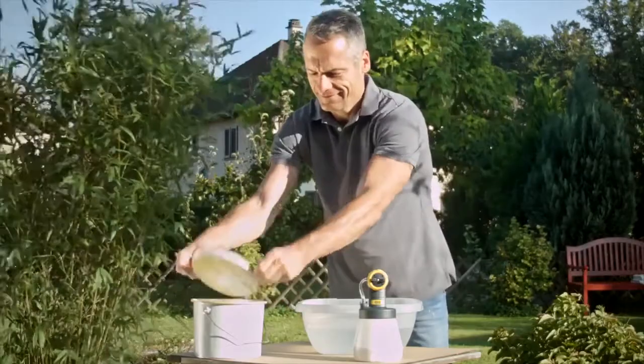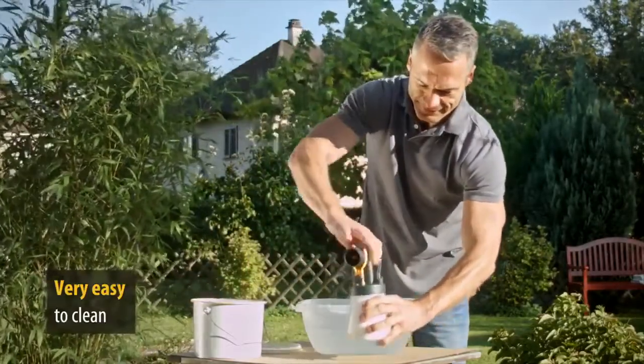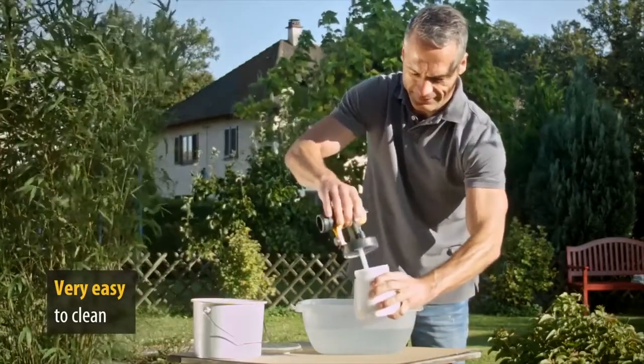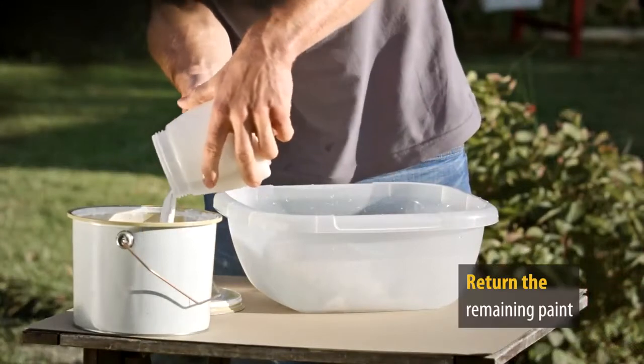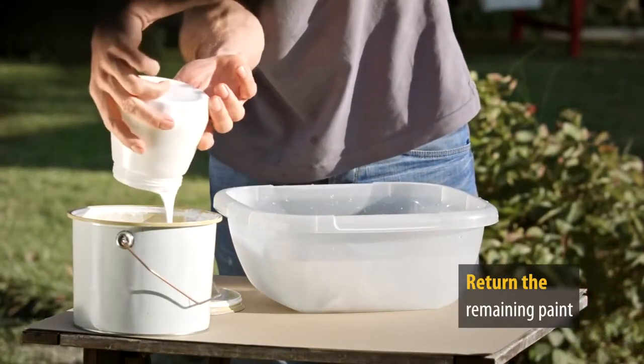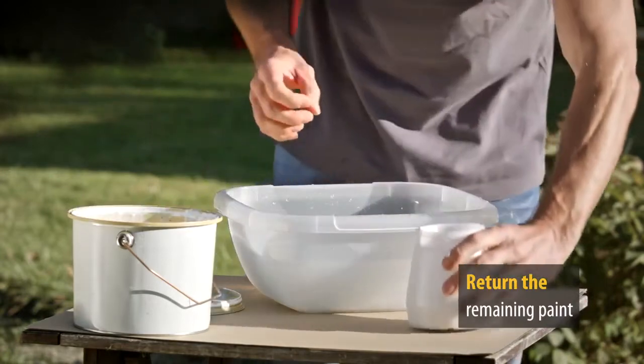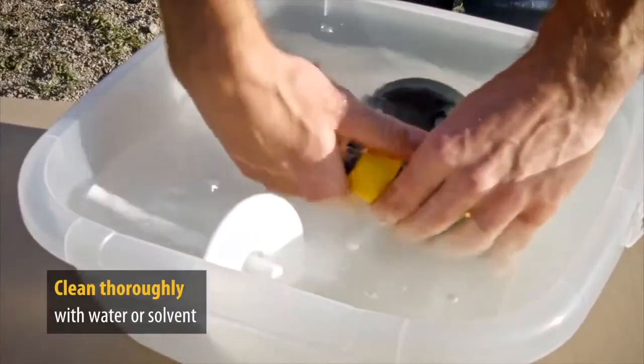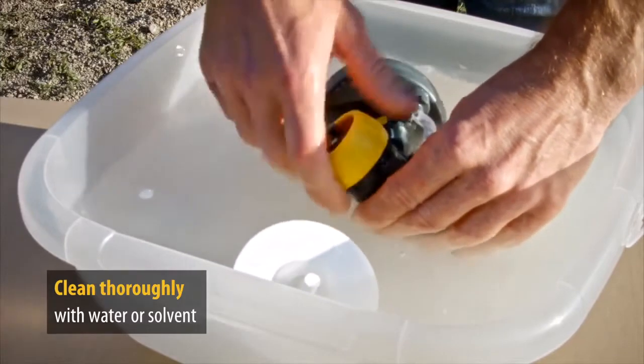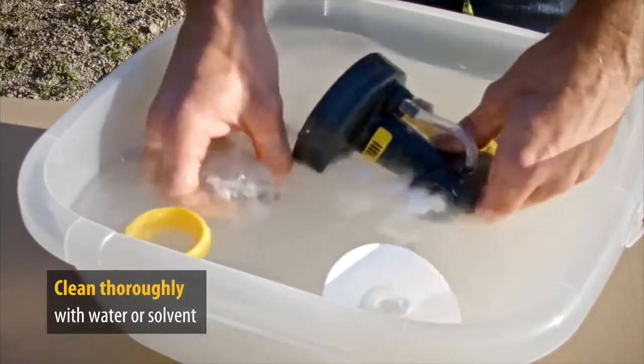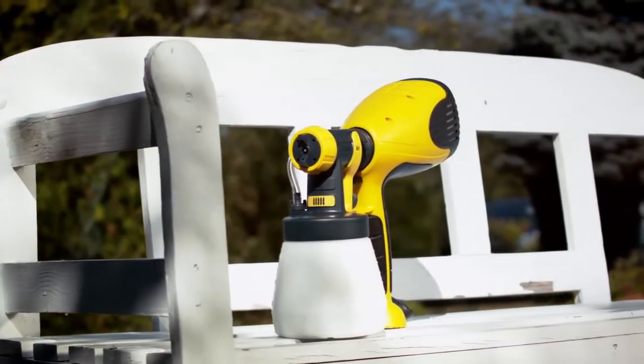The W100 wood and metal sprayer is also very easy to clean. The remaining paint can be poured back into the original container and then clean the individual parts with warm water or solvent. And the W100 is ready for your next job.